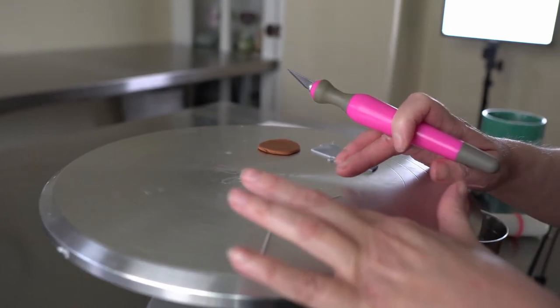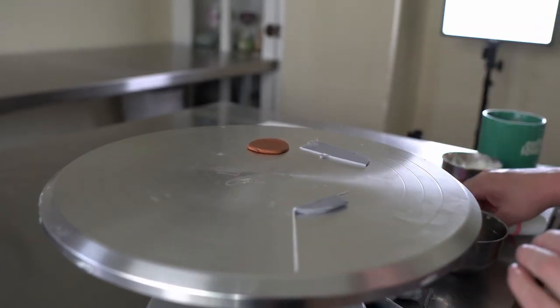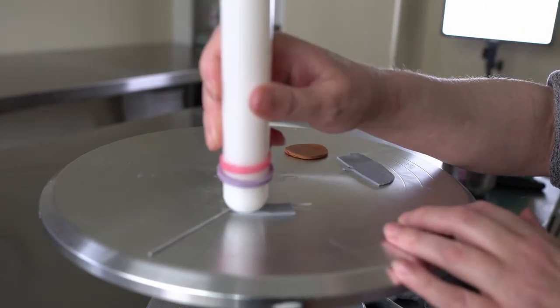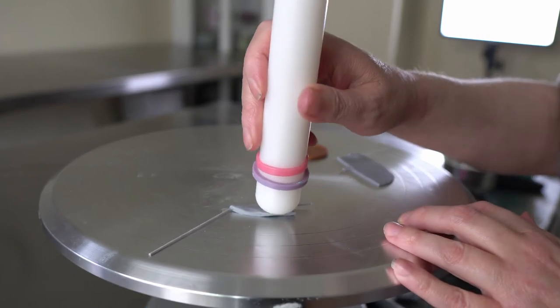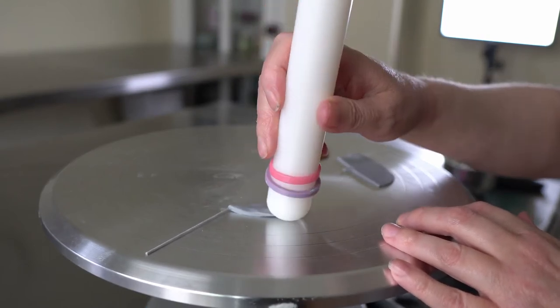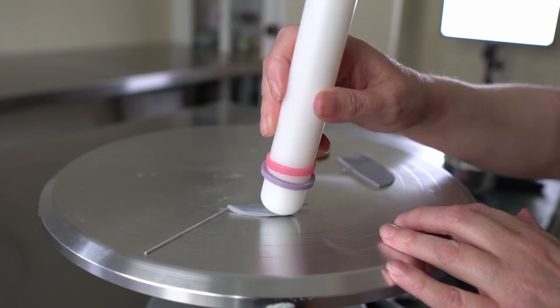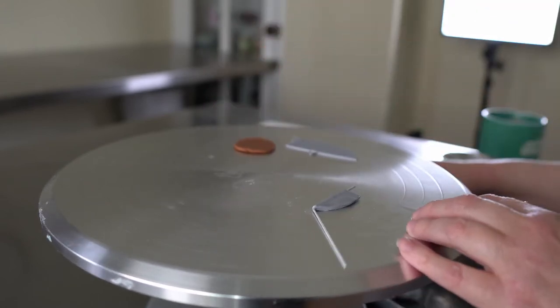I'm going to just gently use the end of the rolling pin where it's curved to kind of flatten that out and give it a bit of an edge.